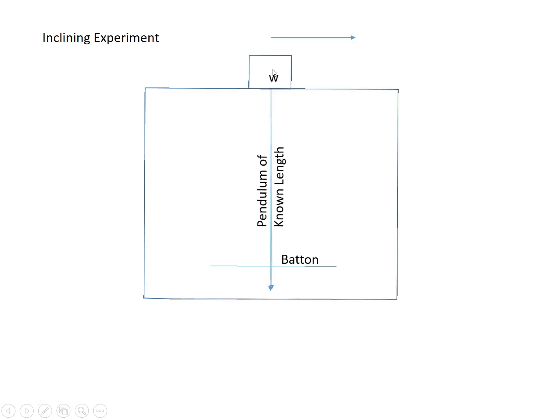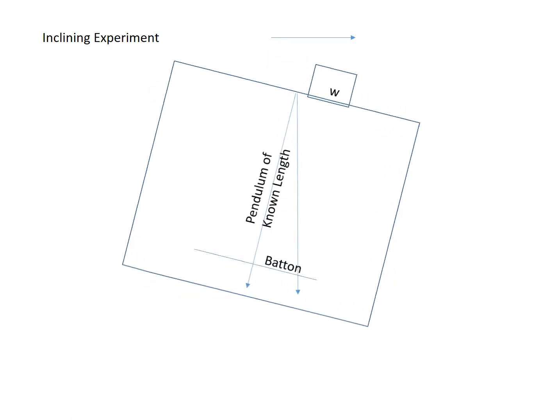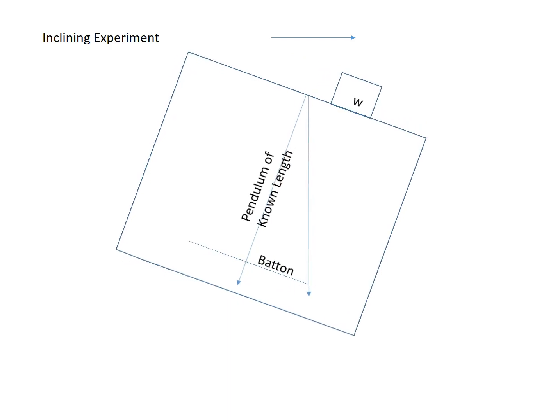So as I slide this weight to starboard, by the way, we know the length of this pendulum. We measure it very carefully before we start this and we mark where the pendulum is on the batten before we shift the weight. So now we shift the weight to starboard and in the process of doing that, the pendulum will still be vertical but since the vessel is inclined, it will have this deflection here from where it was on the centerline before inclination to where it is now after we inclined it.